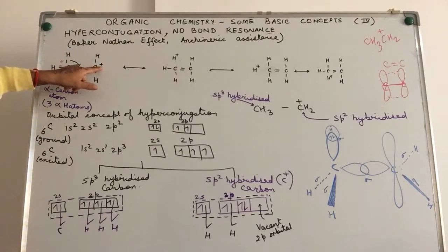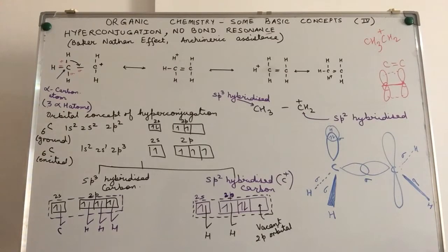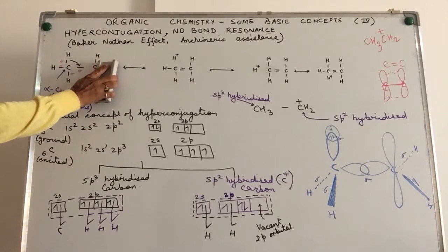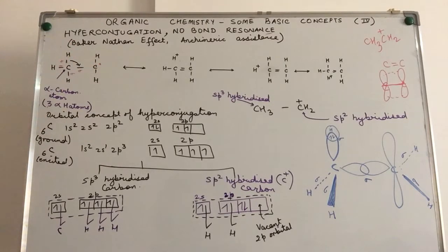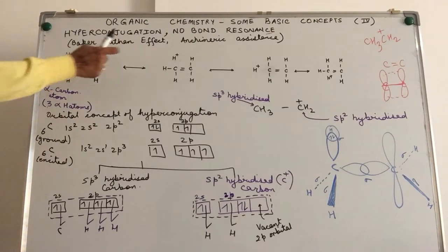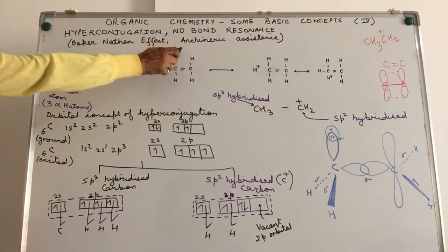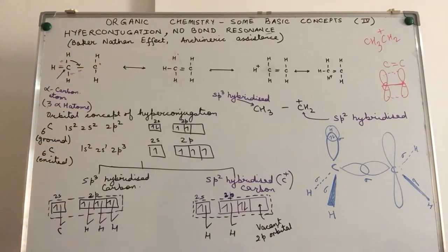We have taken the example of a positive charge over here. As you read further, you will come across cases of free radicals, where instead of a positive charge there is an unpaired electron denoted by a single dot. In the case of a free radical, a similar situation will happen — the hydrogen instead of getting a positive charge will have a single dot indicating the unpaired single electron.